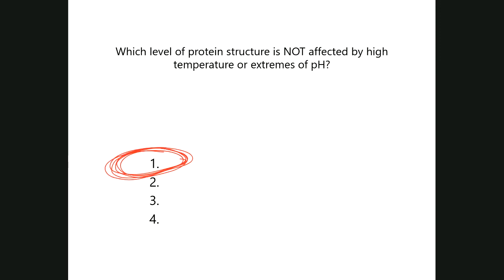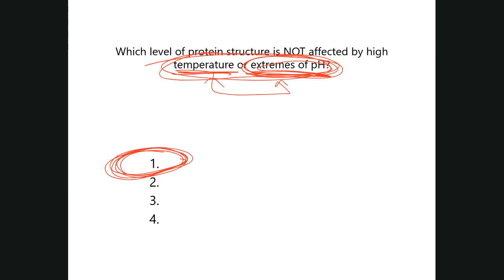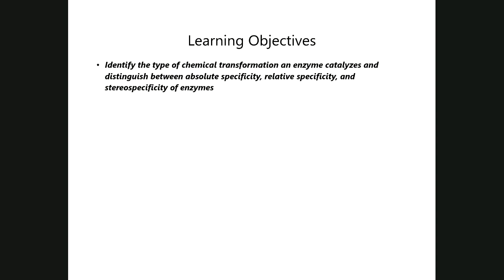The level of protein structure not affected by chemical or physical denaturation is the primary sequence. However, if you heat a protein long enough and simultaneously bring it to very high or very low pH, even the primary sequence does not survive — the protein is technically hydrolyzed into its constituent amino acids. Generally, just heating or adding acid only affects quaternary, tertiary, and secondary structure; the primary structure remains intact unless you take it to the extreme.